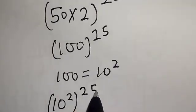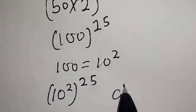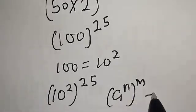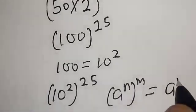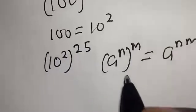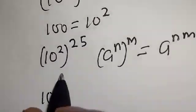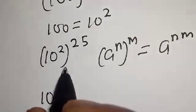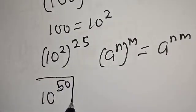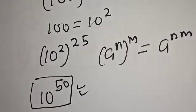But remember that 100 is equal to 10 squared. So we have 10 squared, raised to power 25. Recall that if you have a raised to power n, raised to power m, this is the same as a raised to power n times m. Therefore our final answer is 10 raised to power 25 times 2, that is 10 raised to power 50.